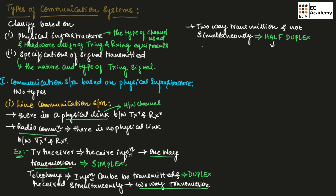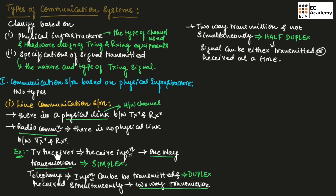In a half-duplex system, the signal can be either transmitted or received at a time. In a TV receiver, it can only receive information, so we have only one-way transmission. Such systems are referred to as simplex systems.